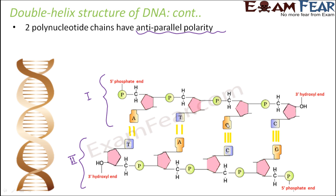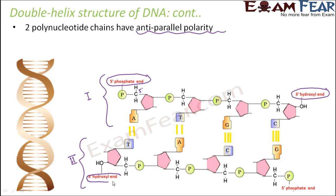Looking at the free ends of the two chains: for the first chain, this is the 5' phosphate end — the phosphate is always on the 5' carbon — and this is the 3' hydroxyl end where you have the free hydroxyl group. But for the complementary strand, the 3' hydroxyl end is on this side and the 5' phosphate end is on the other side. This is what is meant by anti-parallel: one chain runs in one direction and the other chain runs in the opposite direction.